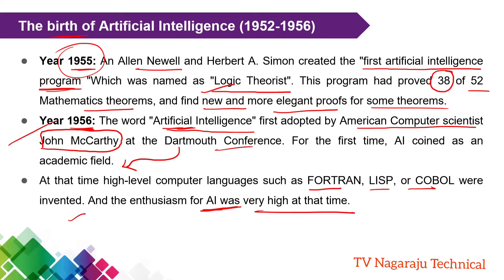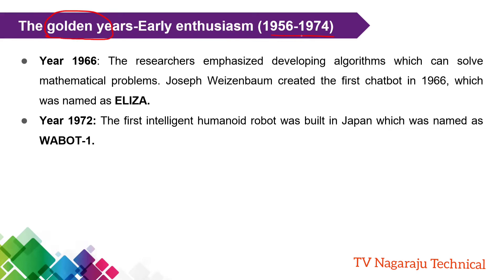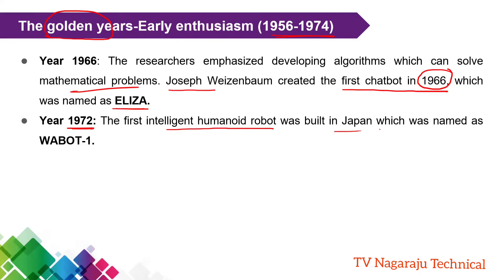Once the birth of AI happened, this became the most popular era. So many researchers got involved in developing algorithms that could solve a large number of mathematical problems. One scientist Joseph created the first chatbot. The first chatbot, named ELIZA, was developed in the year 1966. In the year 1972, one intelligent humanoid robot was also built by Japan, named WABOT-1. This was the golden era of AI.